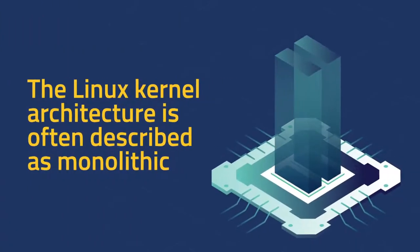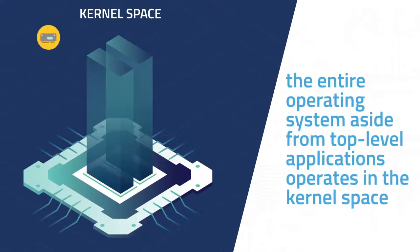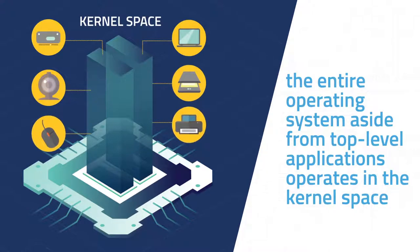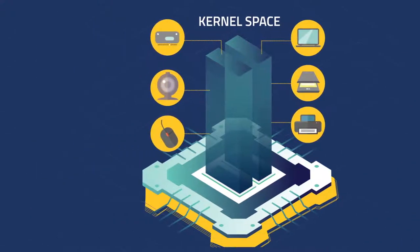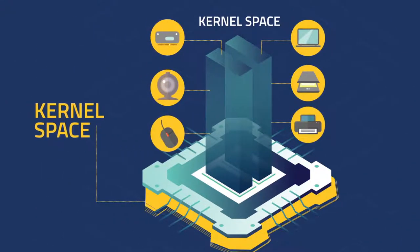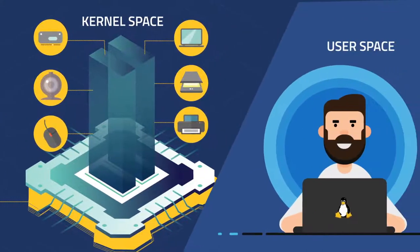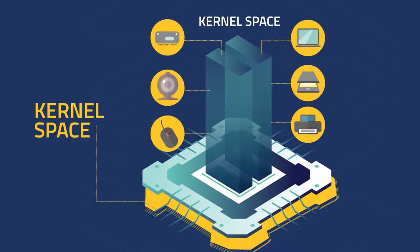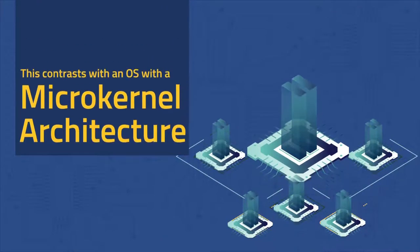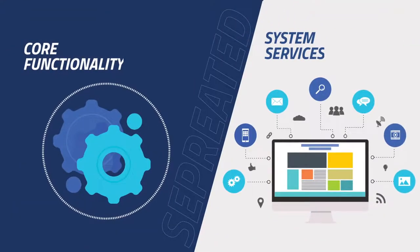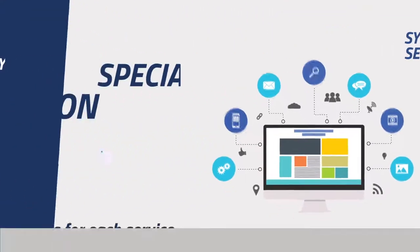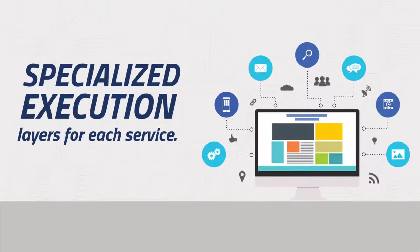The Linux kernel architecture is often described as being monolithic, which means that the entire operating system, aside from top-level applications, operates in the kernel space as opposed to the user space. All services and core functionality share the same kernel space. This contrasts with an OS with a microkernel architecture, where core functionality is separated from system services, which primarily reside in the user space.